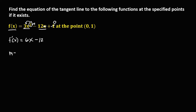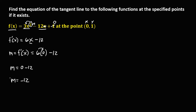To find the slope, since the slope is equal to the derivative of the function, we have 6x minus 12. From the given point, x is 0 and the other is y. So we substitute: 6 times 0 minus 12. Since 6 times 0 is 0, then 0 minus 12 — the slope is negative 12.